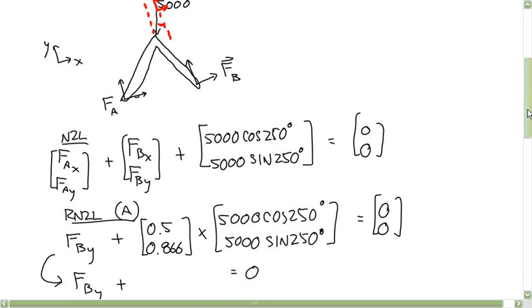Then for the moment equation, I took my moments about the point A. So there's no moment produced by this. This one, we have our force of 5,000 cosine and sine 250.